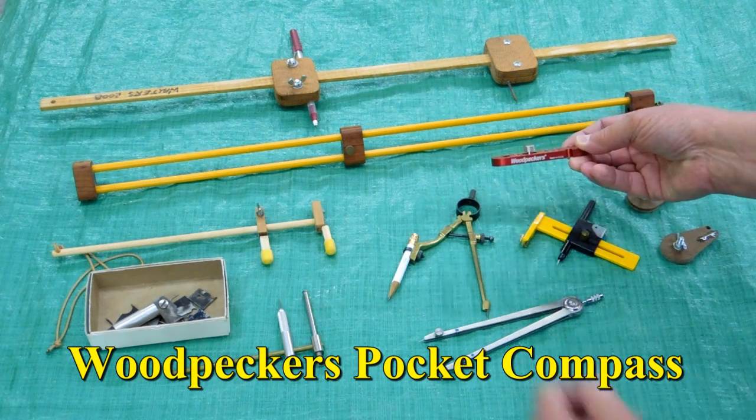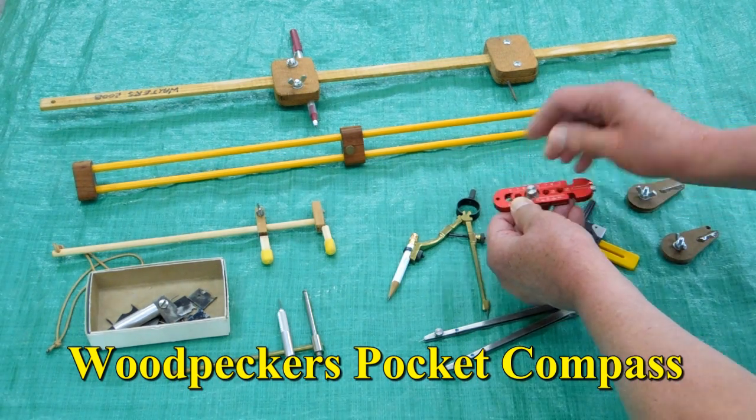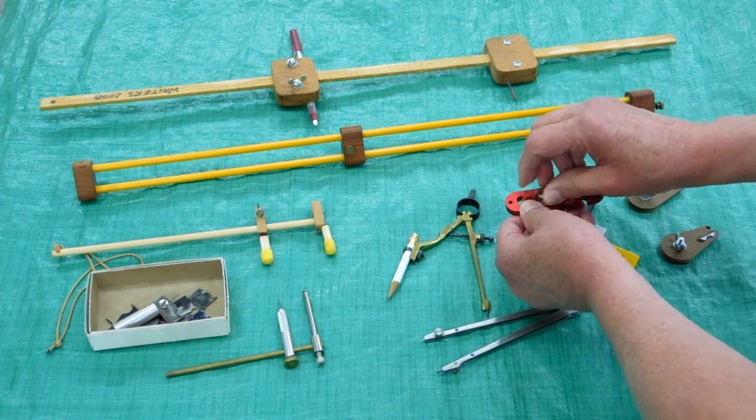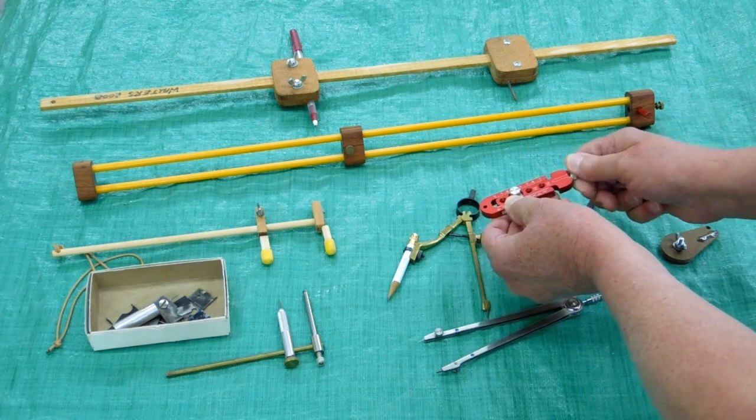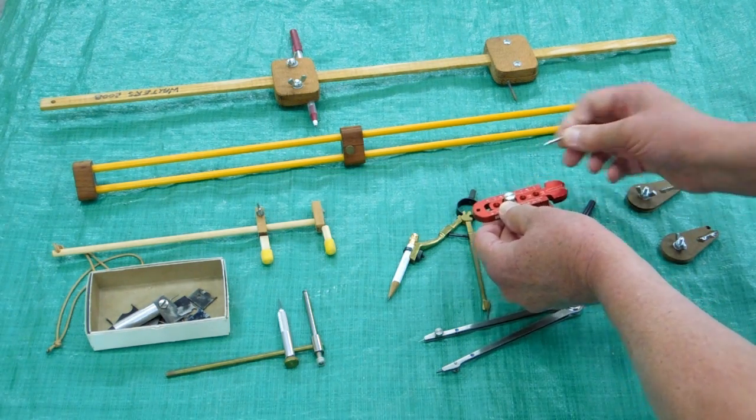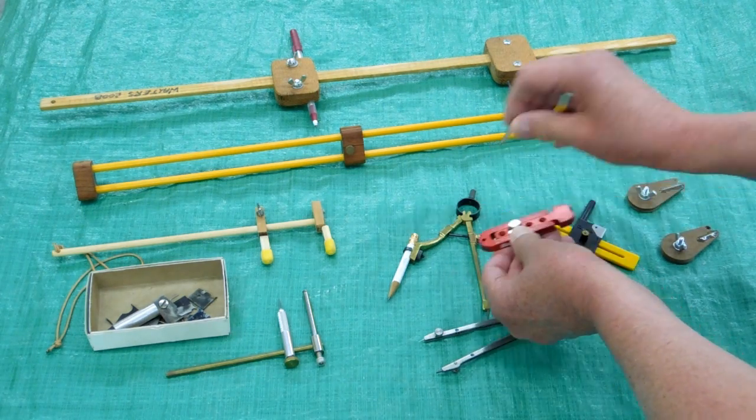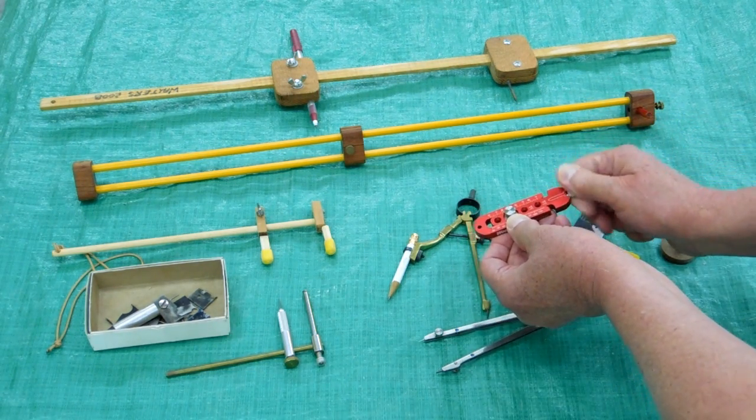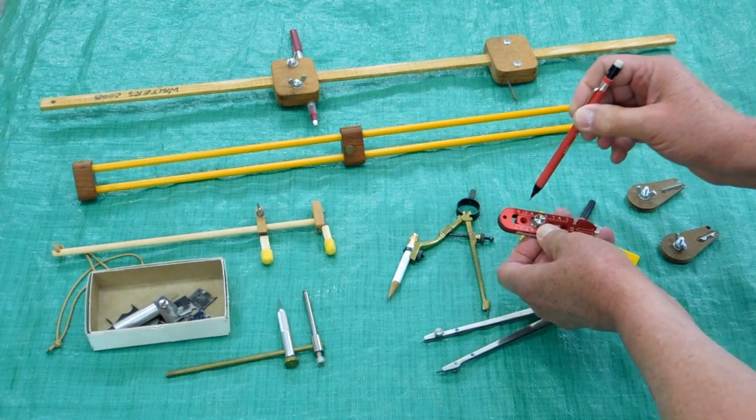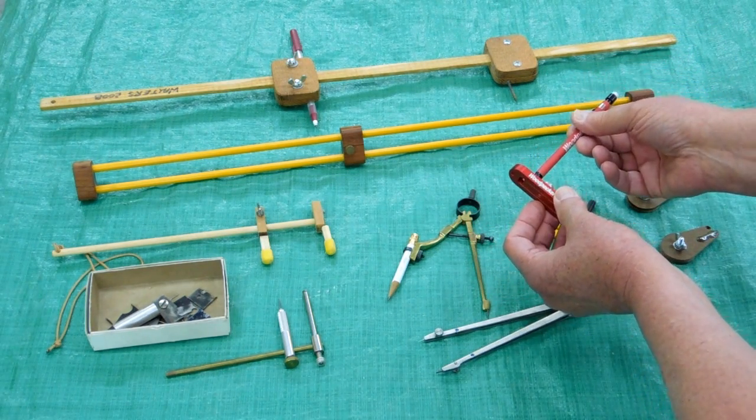This is called a pocket compass. This is made by Woodpeckers, CNC machined, and the pin that it pivots on stores up here so you don't lose it. And that's made for a mechanical pencil lead.